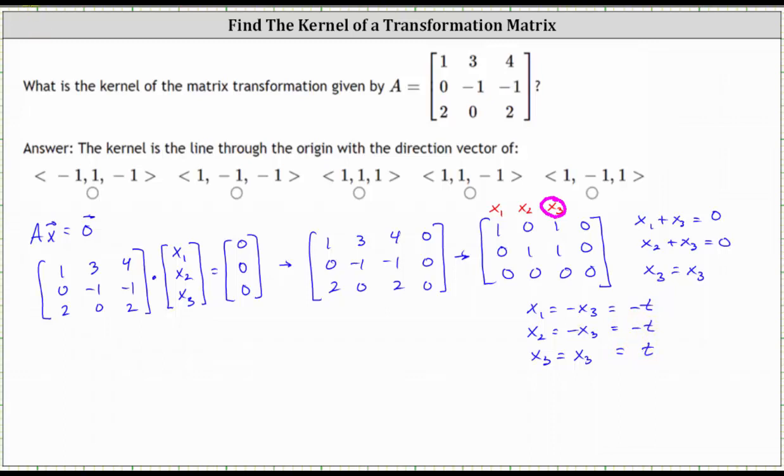So now we know all the vectors x in R^3 such that T of vector x equals the zero vector are in the form of negative t, negative t, t. If we factor out the t, we have t times the vector negative 1, negative 1, 1. So this vector in the spanning set, the vector negative 1, negative 1, 1, forms a basis for the kernel of T.